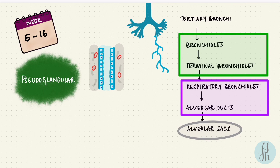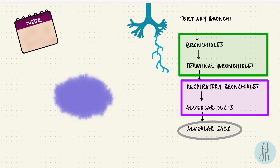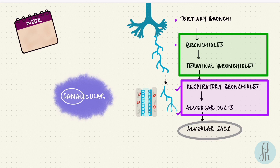The next stage covers respiratory bronchioles leading into alveolar ducts — this is the canalicular stage, from around 16 to 26 weeks. New smaller canals form, and the canals from the previous stage like the bronchioles get wider. It's all about those canals — hence the canalicular stage. The capillaries that formed in the pseudoglandular stage now increase in number.